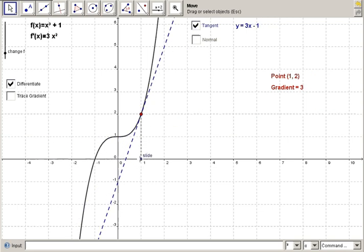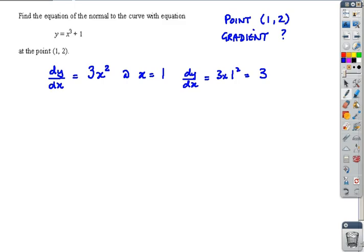The normal is at 90 degrees to that tangent. In green, they share the point but not the gradient. Our task is to find the equation of that normal.